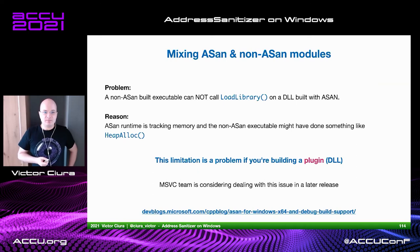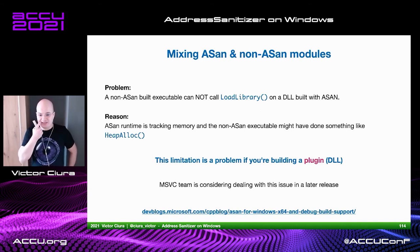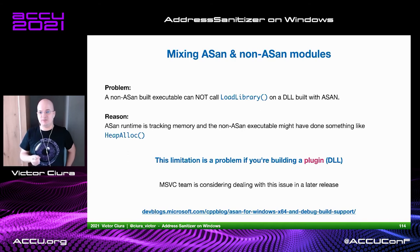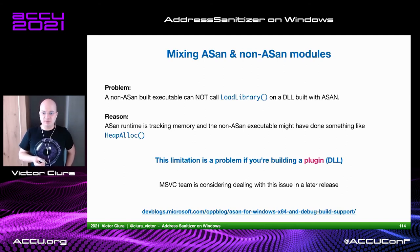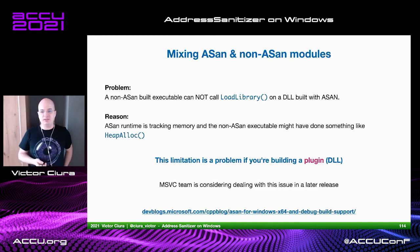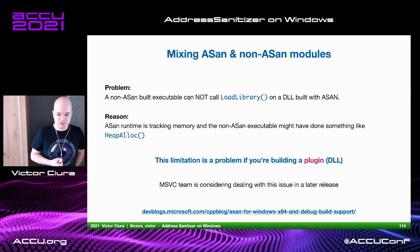One issue we discovered: a non-ASan built executable cannot call `LoadLibrary` on a DLL built with ASan. My understanding is this will be fixed sometime in the future. The reason is that the ASan runtime is tracking memory, and the non-ASan executable may have done something like `HeapAlloc` that the ASan runtime is unaware of. This might be an issue for plugin developers, or anyone developing a DLL that gets loaded by a host executable they don't control.